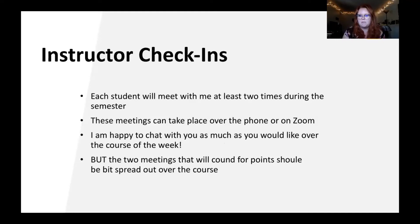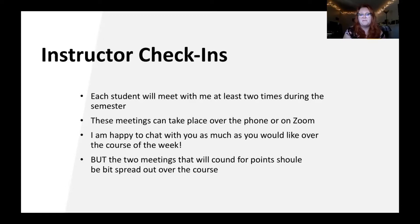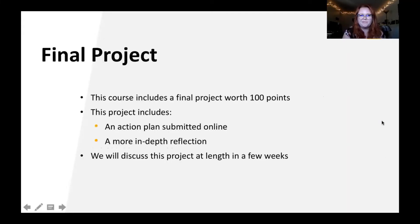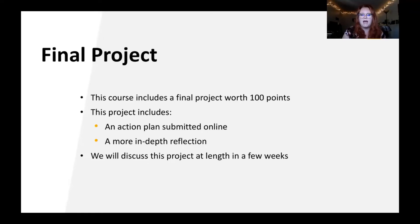Each student will meet with me at least two times during the semester. These meetings can take place over the phone or on Zoom. The two meetings that count for points should be spread out over the course. The final project is worth 100 points and includes an action plan submitted online plus a more in-depth reflection. You'll be writing reflections throughout the course, and the final one will have you reflect on a past one and build out a further answer. This is an eight-week course, so things go by quickly, but we still have a little time before diving into the final project.